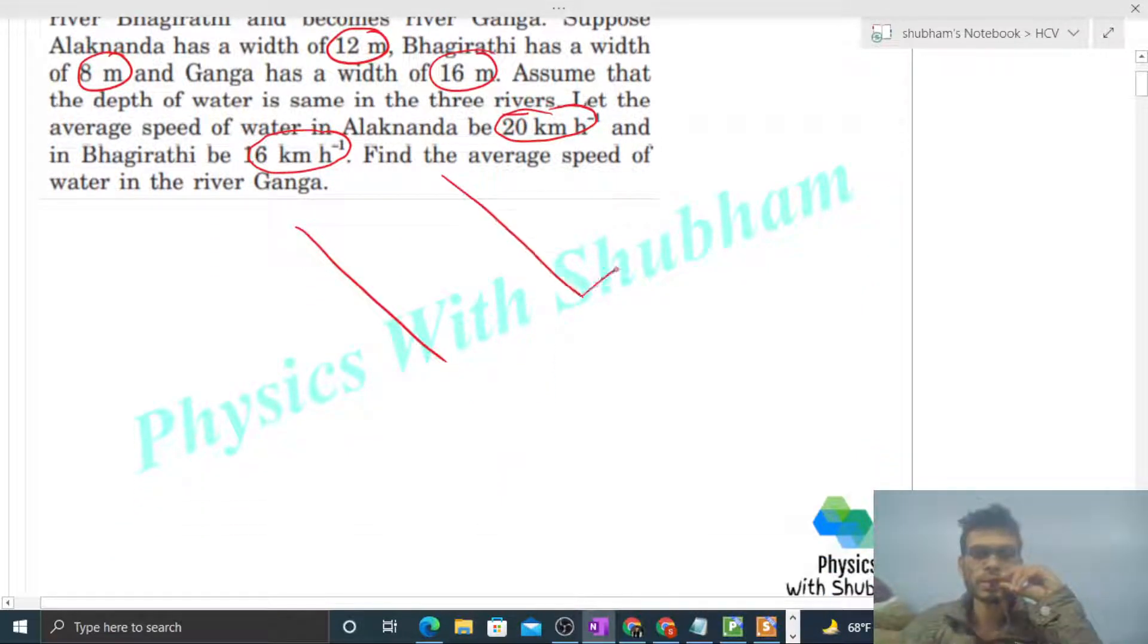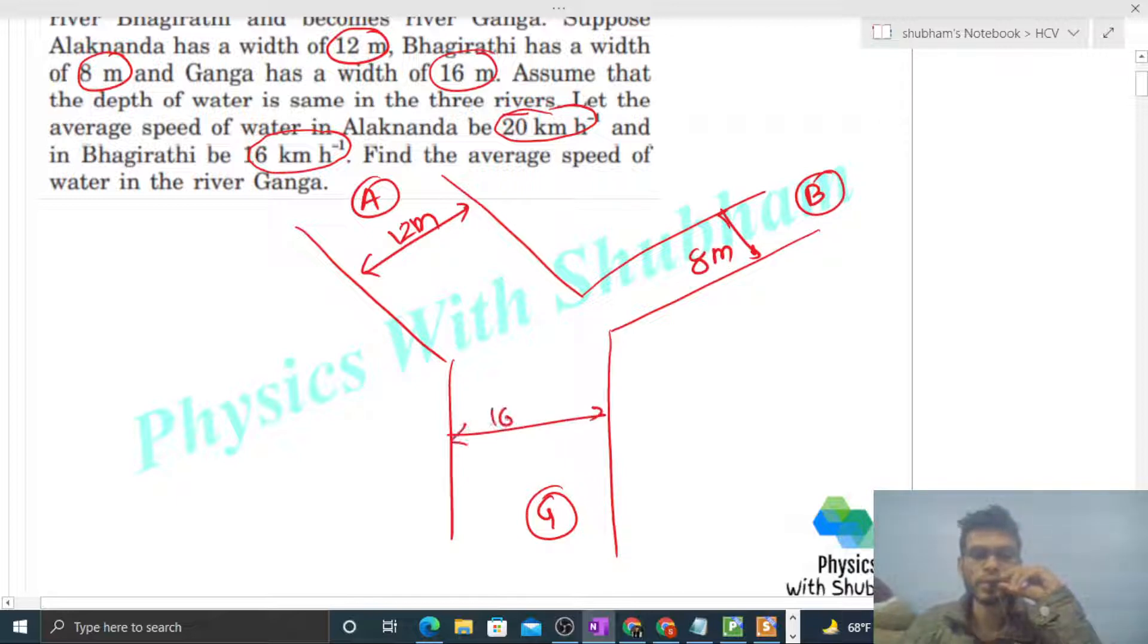Let's say this river is Alaknanda, this river is Bhagirathi, and this river is river Ganga. Width is given: for Alaknanda it is 12 meters, for Bhagirathi it is 8 meters, and for river Ganga it is 16 meters.